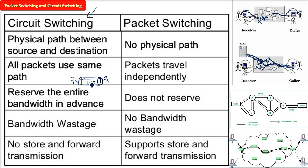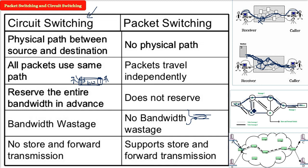Another difference is bandwidth wastage: in circuit switching, bandwidth is wasted; in packet switching, there is no bandwidth wastage. In circuit switching, there is no store-and-forward transmission; packet switching supports store-and-forward. In circuit switching, once the path is established, packets always take the same path with no need to store. In packet switching, the packet must look for a path, decide a route using routing algorithms, and may be stored before forwarding.